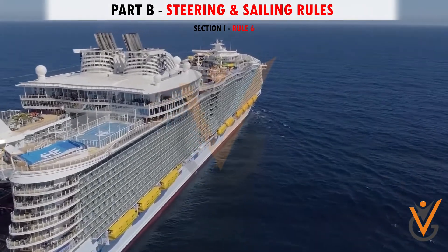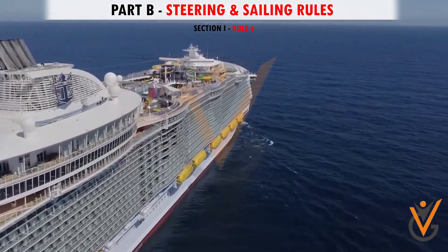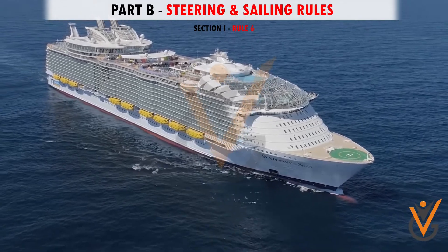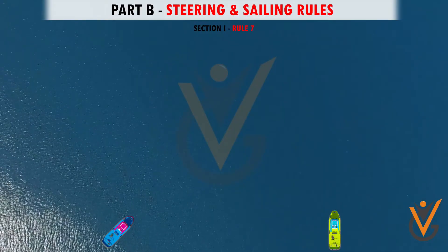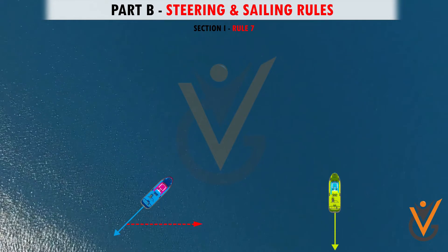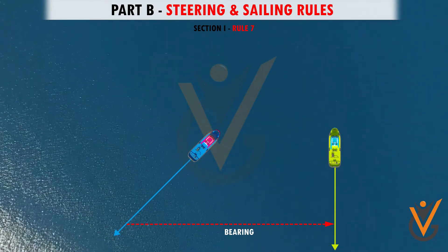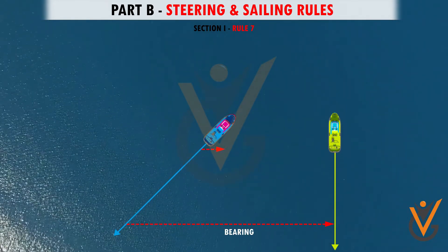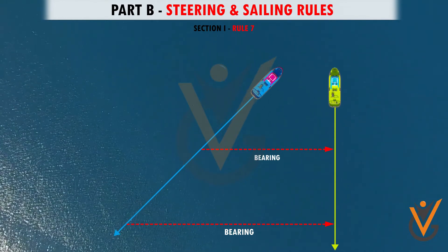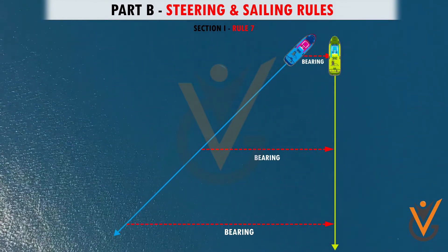Rule 6 states that vessels must at all times proceed at a safe speed. Rule 7 states that every vessel should use all available methods to determine risk of collision. Risk of collision exists if the compass bearing of an approaching vessel does not change appreciably.